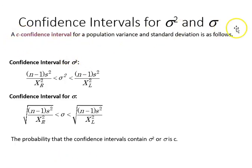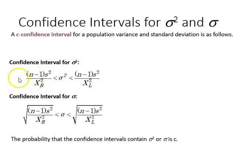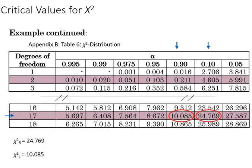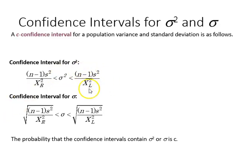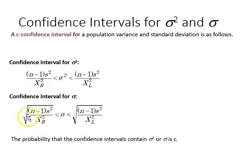These are the confidence interval formulas for variance and standard deviation. For variance, we're trying to capture the population variance using a left and right endpoint, found through the equations: (n minus 1) times s-squared over chi-square R for the right endpoint, and (n minus 1) times s-squared over chi-square L for the left endpoint. For standard deviation, we're capturing the population standard deviation between two cutoff points using the same chi-square values — these are simply the square root of the variance endpoints.